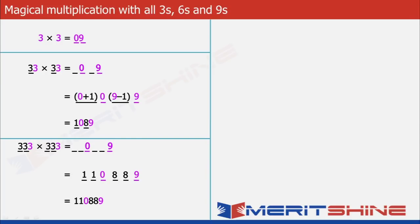So far we have seen the multiplicand and the multiplier were the same. Now let us see when they are different but still made up of the same digits. Let us begin by taking 333 × 33 as an example.